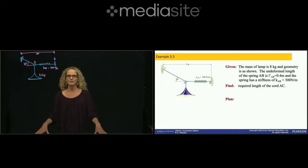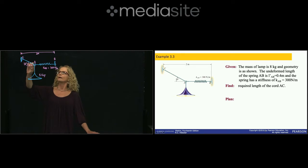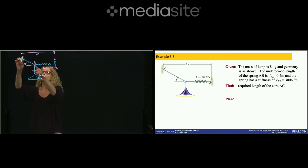Hi. This is problem 3.3. We're working here in chapter number 3 of our book, and this is the equilibrium of particles. In this problem, the mass of the lamp is 8 kilograms, as you see, and as you see in the geometry, this lamp is held by a tension of this cord and by a spring which creates also a force. And they are asking us to find the required length of this cord to hold the lamp in equilibrium.